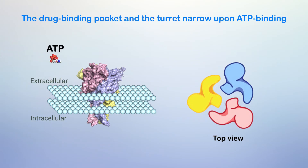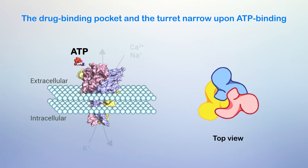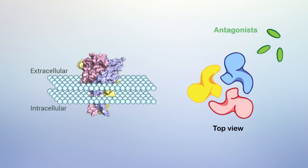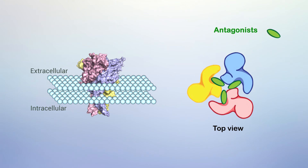Because such conformational changes are required for channel opening, binding of the P2X7 antagonists precludes these constrictions, thereby efficiently blocking receptor activation.